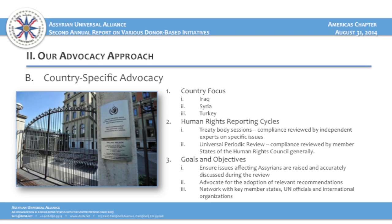The second approach in our advocacy is country-specific — looking at the human rights situation of Assyrians within specific countries: Iraq, Syria, and Turkey, which are countries Assyrians are indigenous to. By virtue of being member states of the United Nations, these countries are subject to periodic reporting of their human rights record, during which organizations like AUA and Human Rights Watch can influence discussion by submitting reports and providing statements.